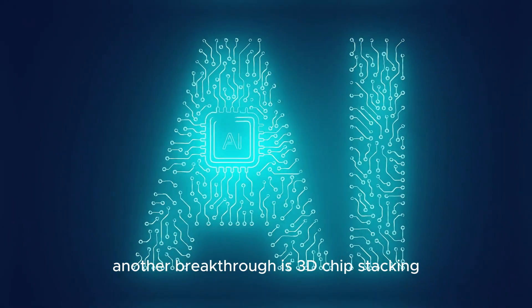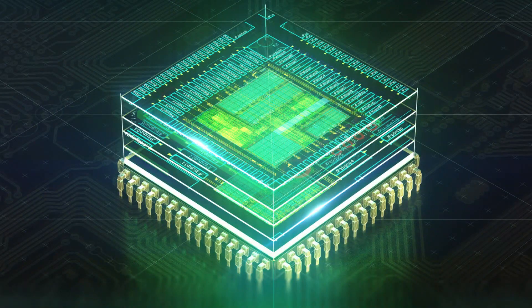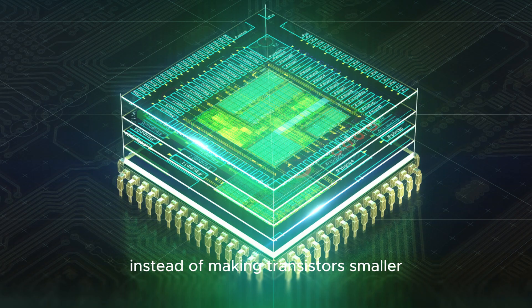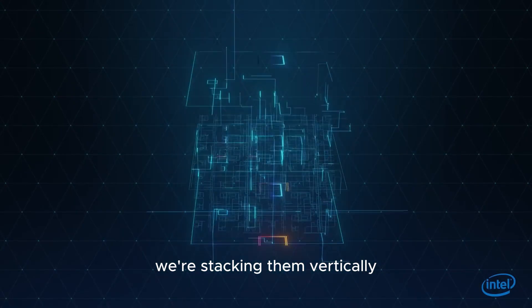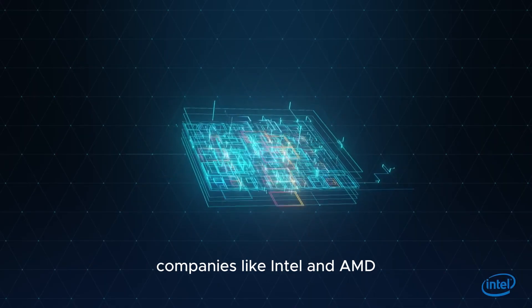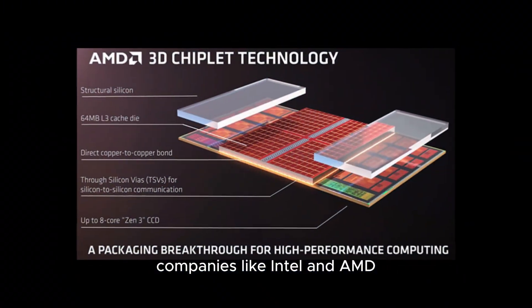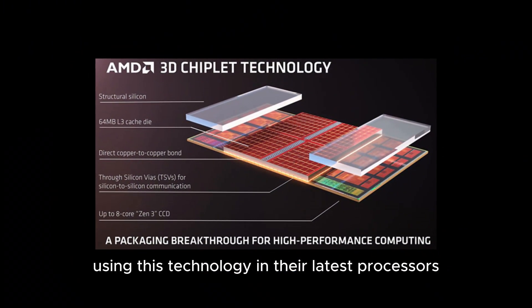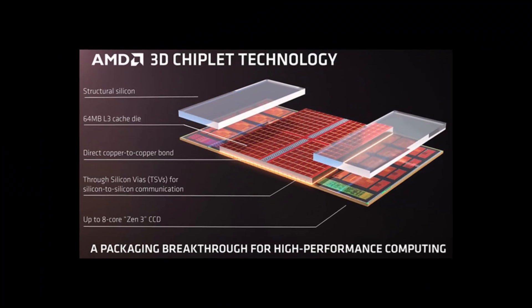Another breakthrough is 3D chip stacking. Instead of making transistors smaller, we're stacking them vertically. This allows us to pack more power into the same space. Companies like Intel and AMD are already using this technology in their latest processors.